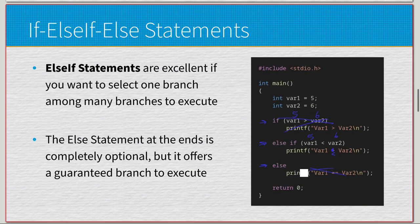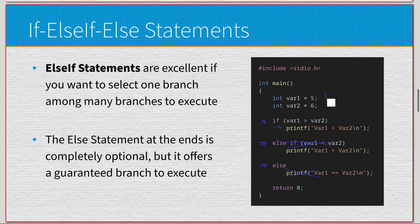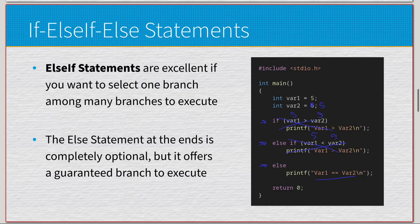If we change the values so var1 = 6 and var2 = 5, then 6 > 5 is true and the if branch prints; we don't even check the else-if. Alternatively, if both values are 5, then 5 is not greater than 5 and 5 is not less than 5, so neither the if nor the else-if executes — we fall through to the guaranteed else branch, which prints that var1 equals var2.